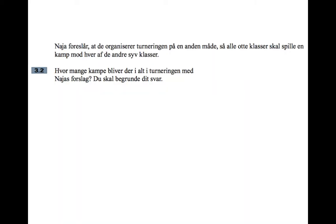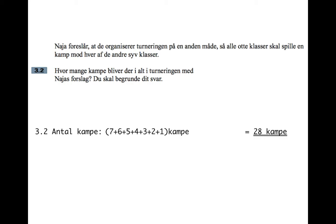Nudger suggests that they organise the tournament in a different way so that all eight classes play a game against each of the other seven classes. How many games will there be with Nudger's suggestion? You have to justify your answer. One way of looking at it: the first team has to play seven other teams, then team number two has already played team one so there are six other teams left, then the next team has five, and so on. So you can think of it as seven plus six plus five plus four plus three plus two plus one, which makes 28.